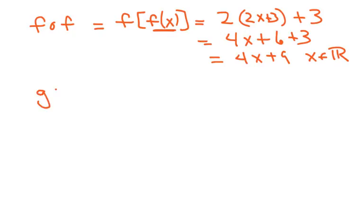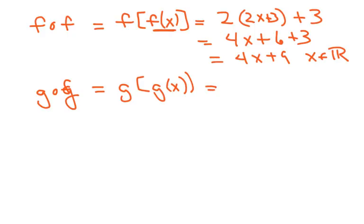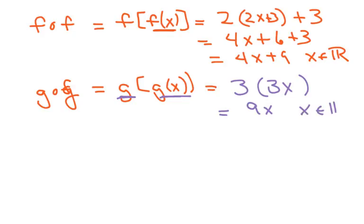And then we're going to do g composed of g of x. I write down g of x, which is 3x, put in parentheses, and dump in g of x, which is 3x. That equals 9x, and x belongs to all reals.